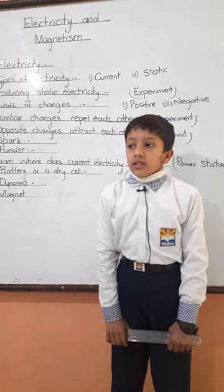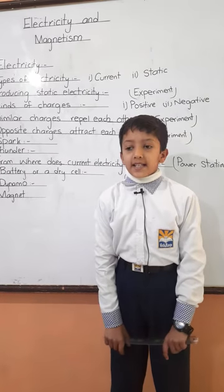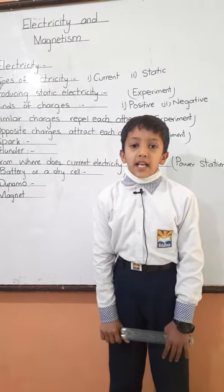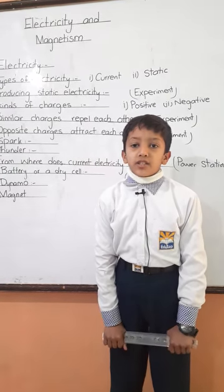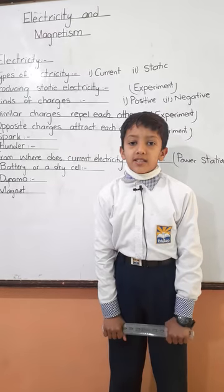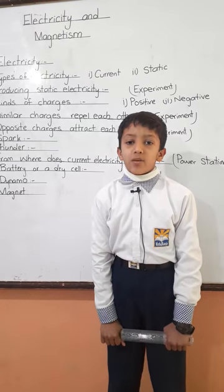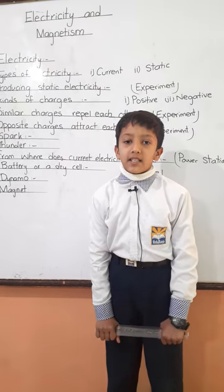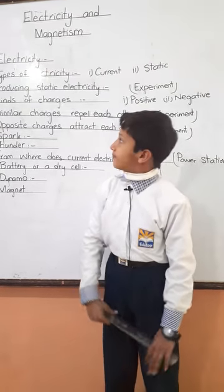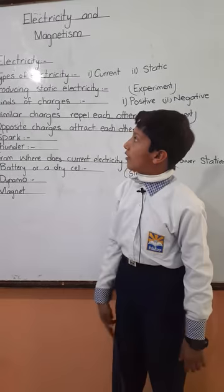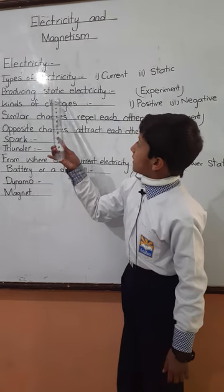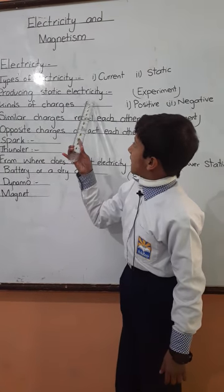And static electricity — the electricity which gathers over some objects — is called static electricity. Now I will tell you about producing static electricity.